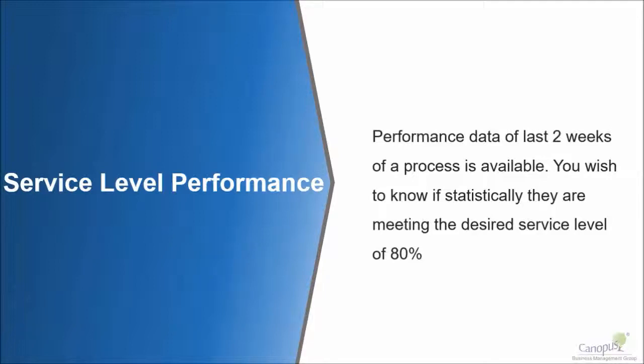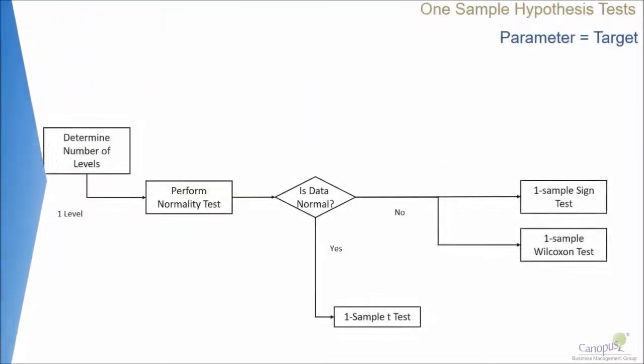So we have 24 data points and we want to know if we are able to meet the standard. What would you do? We go to the table that can help us to decide what kind of test we should do. We have one level of data so we have to perform a normality check.